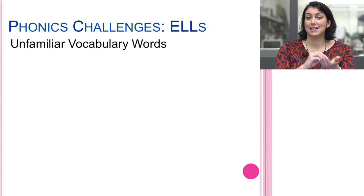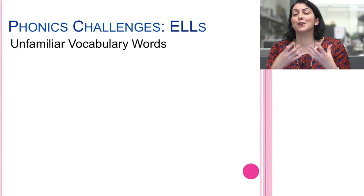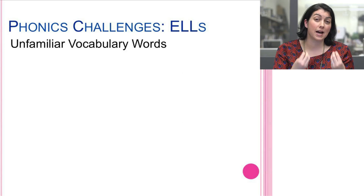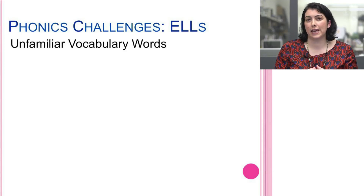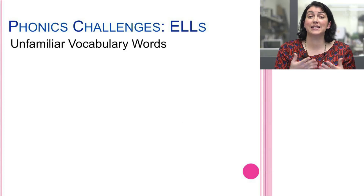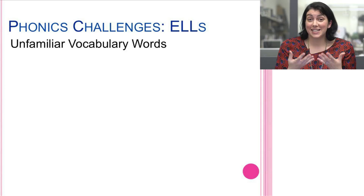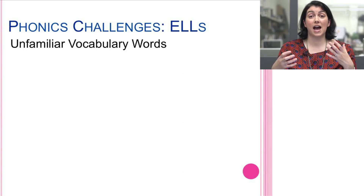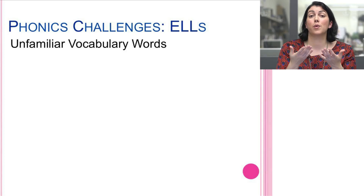Many of the vocabulary words we're asking them to decode may be unfamiliar. One way students learn to read in their first language is by decoding the first few sounds and predicting the rest of the word because it's known to them. This is an added challenge for a student learning to read in a second language, especially when we can't assume they've had any literacy instruction in L1 — which is very common for our kindergarten and first graders.